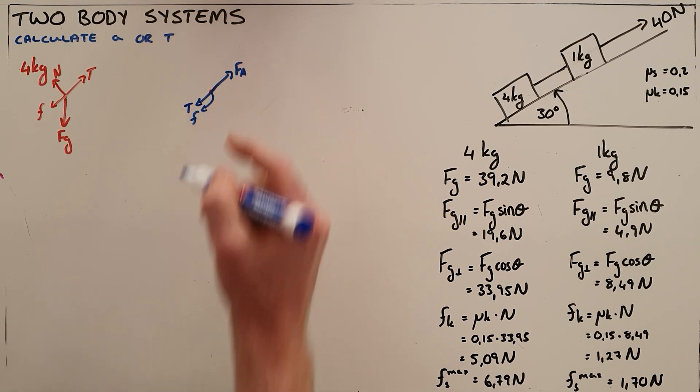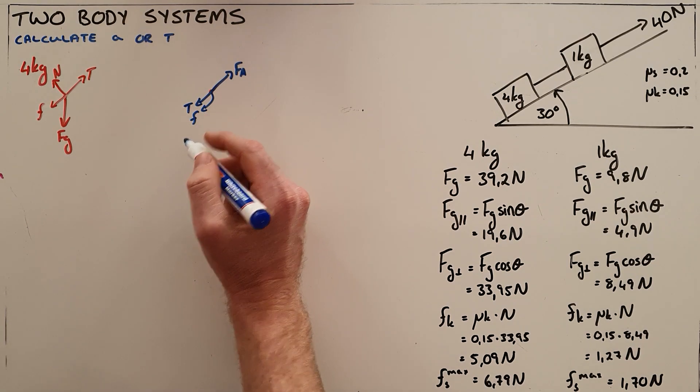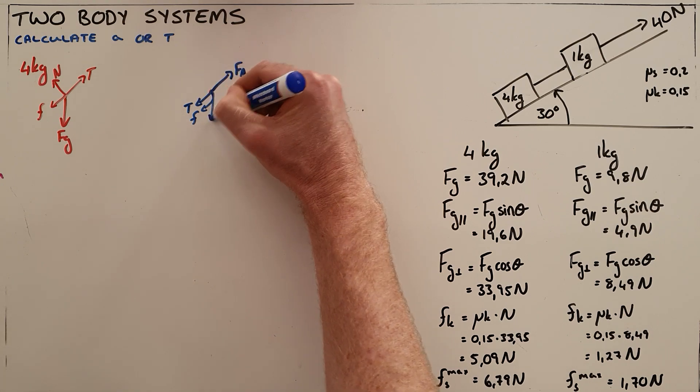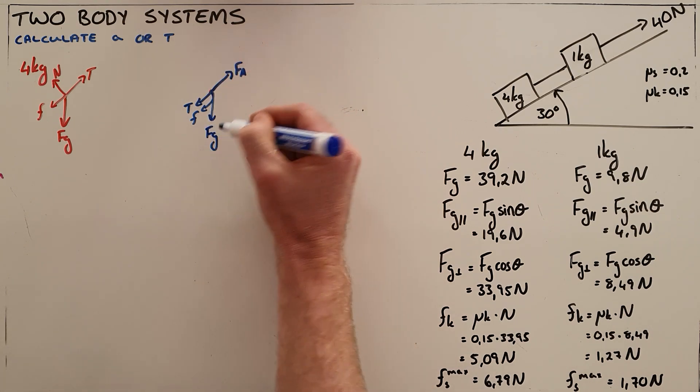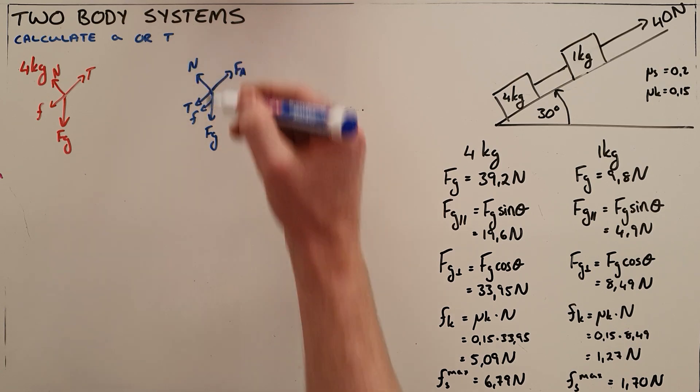There is also a frictional force pulling the object down the slope and then there is a force of gravity acting vertically downward and again your normal force.